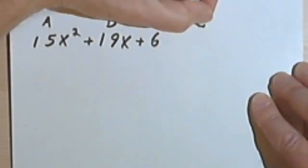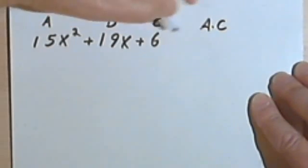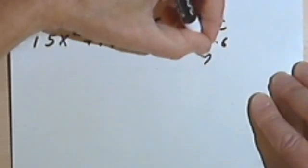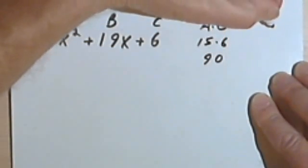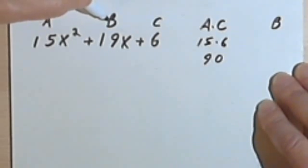We're going to multiply A times C. In other words, we're multiplying 15 times 6. So 15 times 6, and that gives me 90. And I also want to write down what the B coefficient is. That's 19.